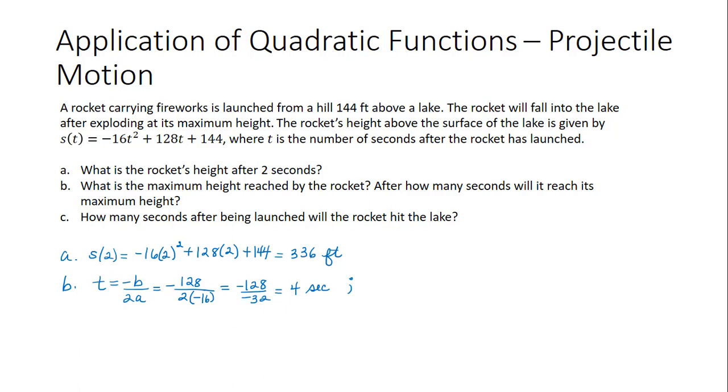To find the height, we now plug in 4 in place of t. s(4) is equal to negative 16 times 4 squared, plus 128 times 4, plus 144. And when we simplify that on our calculator, we will get 400. So the rocket reaches a maximum height of 400 feet after 4 seconds.